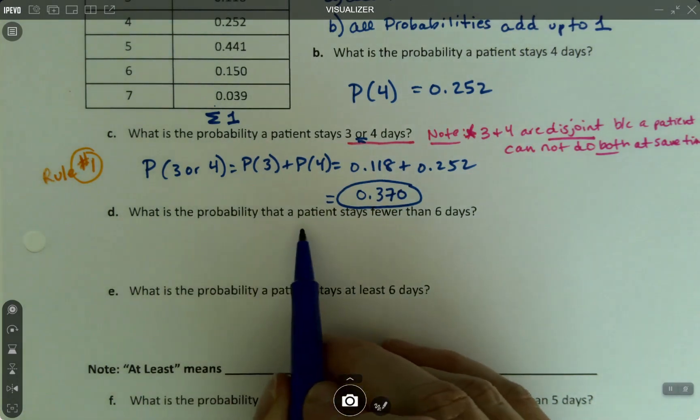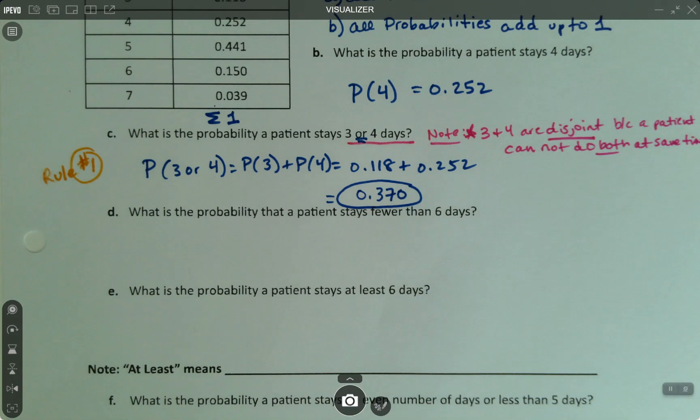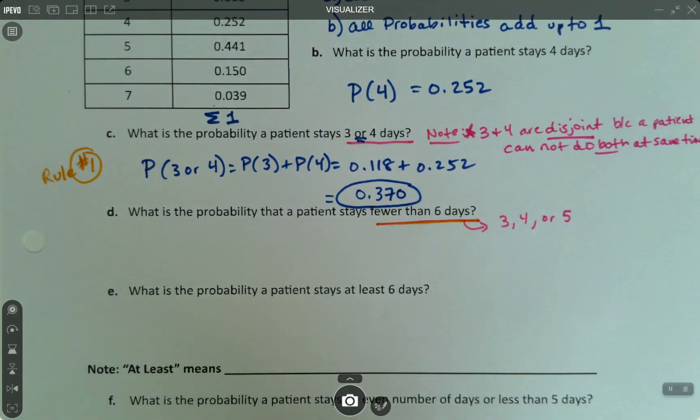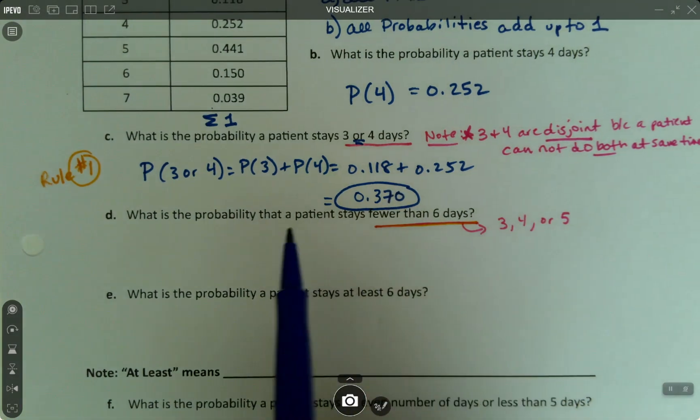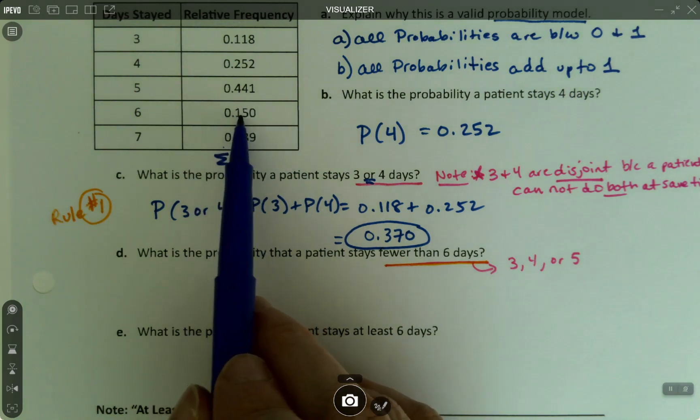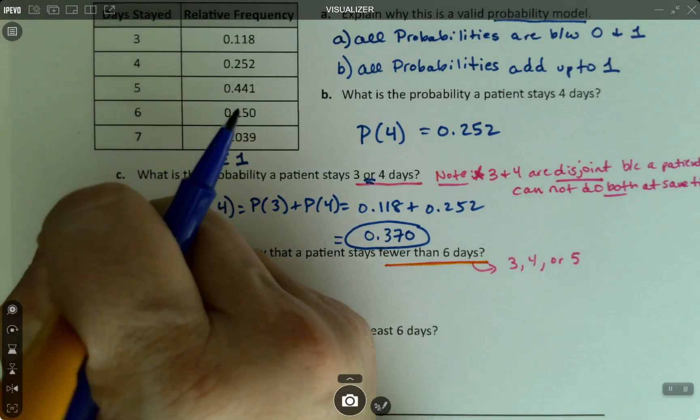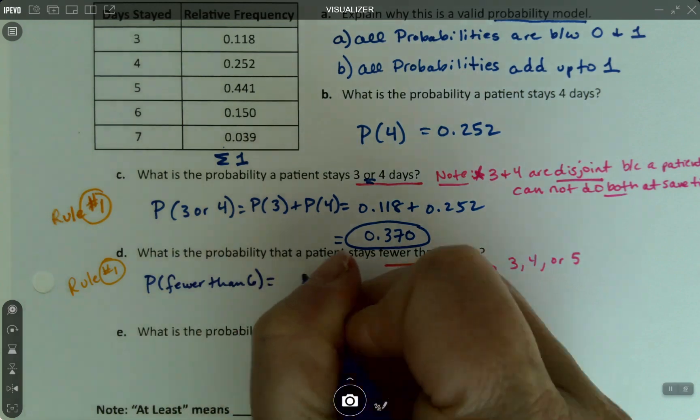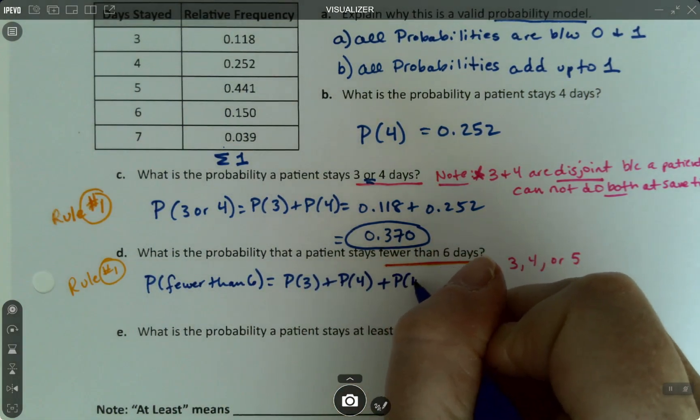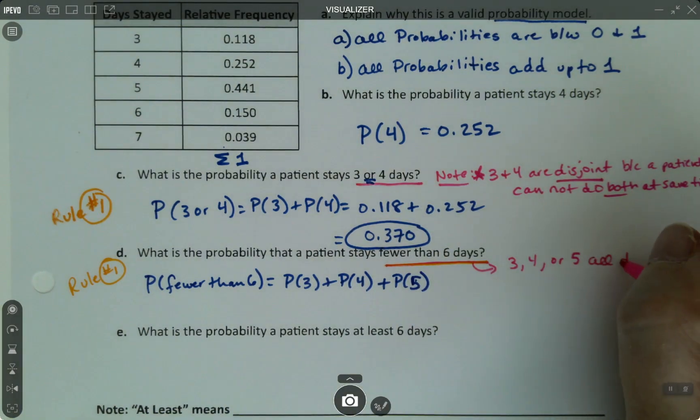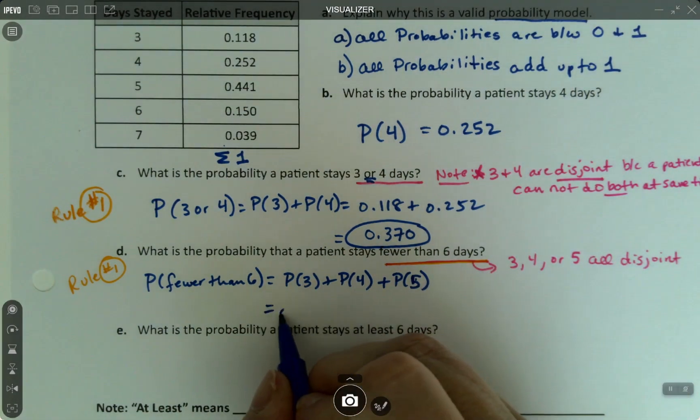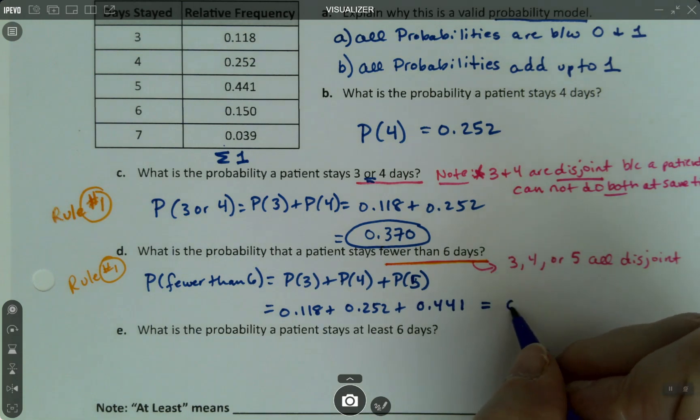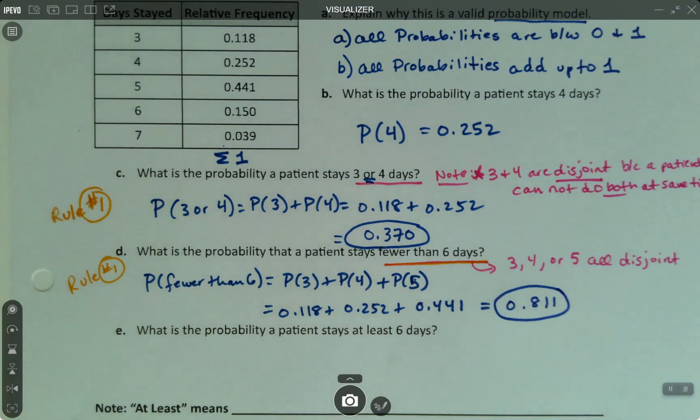What's the probability that a patient stays fewer than six days? Well, fewer than six would be three, four, or five, right? So what I'm really asking is what's the chances that they stay three, four, or five, or in other words, less than six. So six is no good. Seven is no good. So again, this is rule number one. We can just add up all the values. So the probability of fewer than six is the probability of three plus the probability of four plus the probability of five. And I should say these are all disjoint. So that would be 0.118 plus 0.252 plus 0.441, which adds up to 0.811.